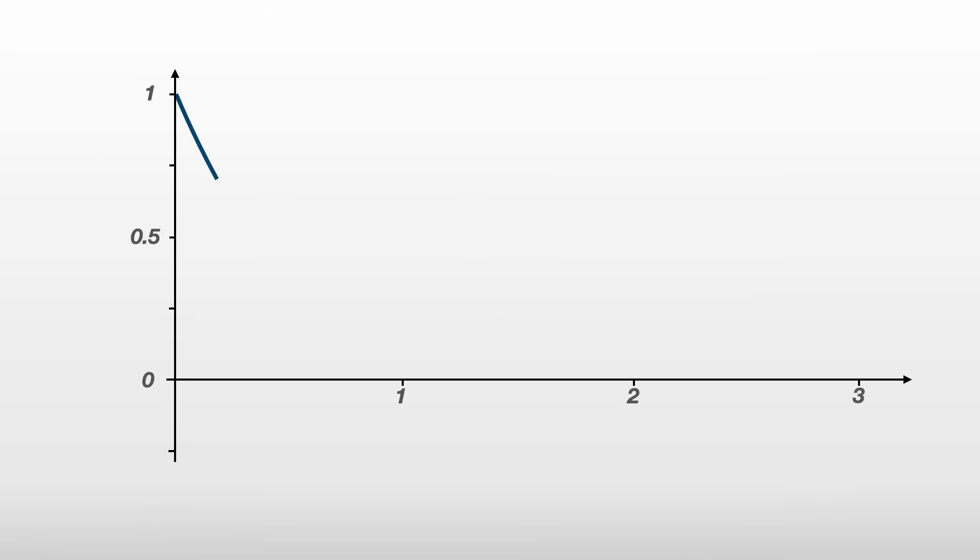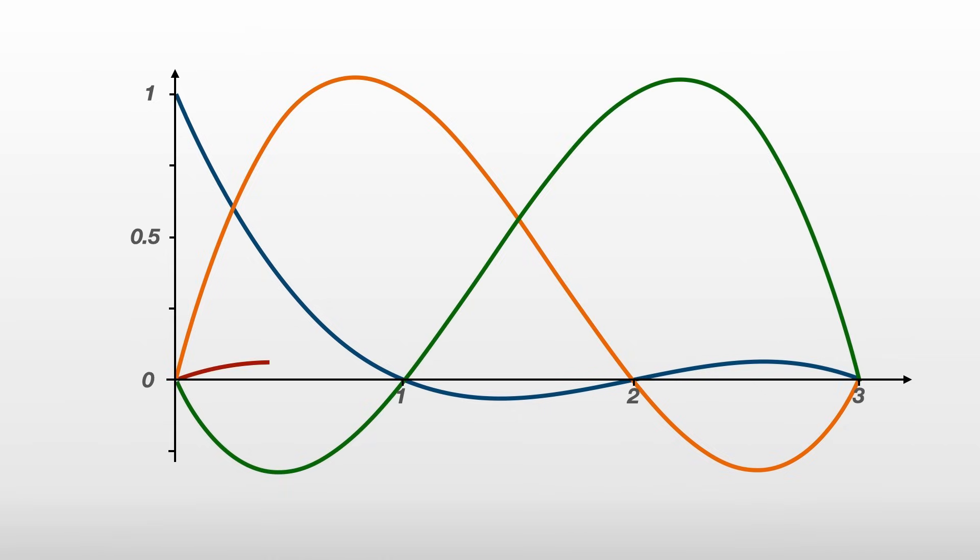And so for the nodes 0, 1, 2, and 3, these are the Lagrange polynomials.